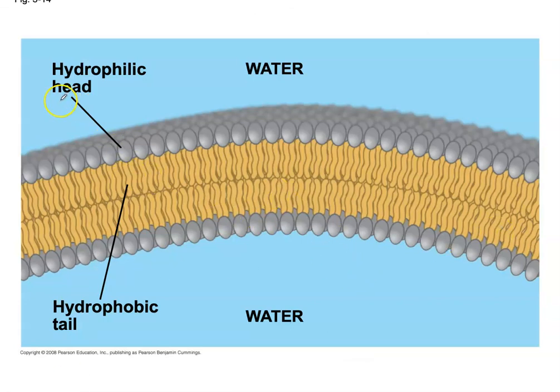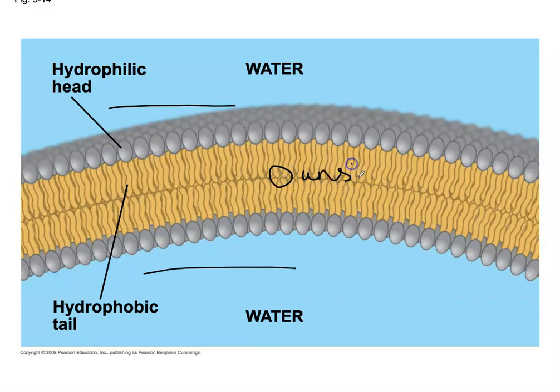The hydrophilic heads face the outside and inside of the cell, and the hydrophobic tails are packed in the middle. The tails are unsaturated — they have at least one double bond. The difference between phospholipids and regular lipids is that phospholipids have two fatty acid tails and a phosphate group instead of three tails. The two tails form an ester bond with the alcohol via a dehydration reaction — the same transesterification process.